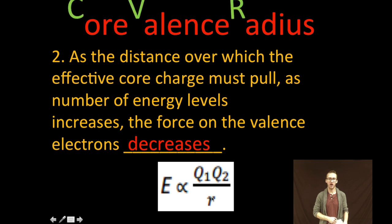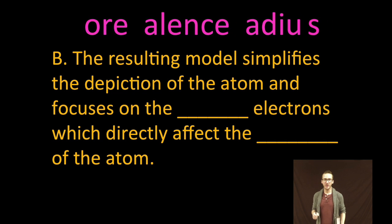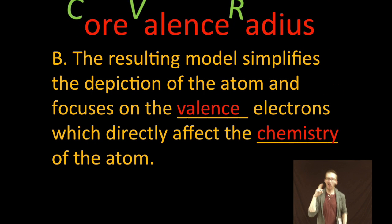So again, coming back to Coulomb's law, as that positive charge in the core gets further and further away from the valence level, the energy of attraction is going to decrease. But again, the whole purpose of CVR format is to simplify our depiction of the atom and focus on the valence electrons, which directly affect the chemistry of the atom and are most important for us moving forward.